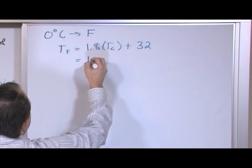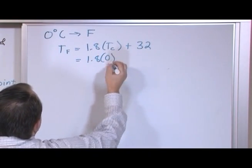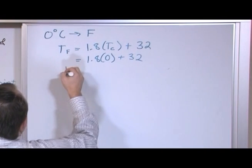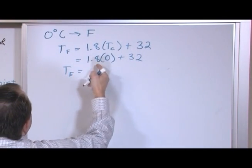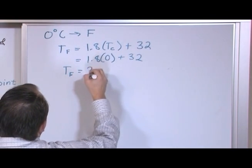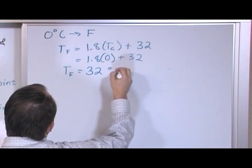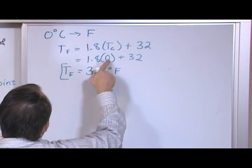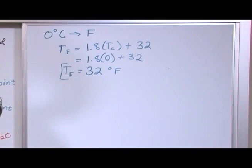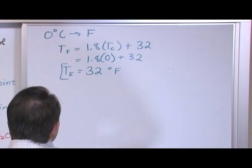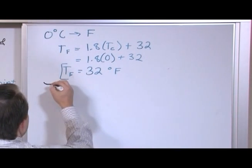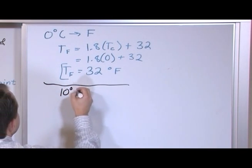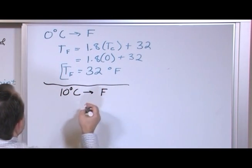You take 1.8, drop in 0 degrees Celsius, plus 32. The 1.8 times 0 multiplies to 0, so you're just left with 32 degrees Fahrenheit. So 0 degrees Celsius equals 32 degrees Fahrenheit. Not too bad, because 0 is an easy number to deal with there.